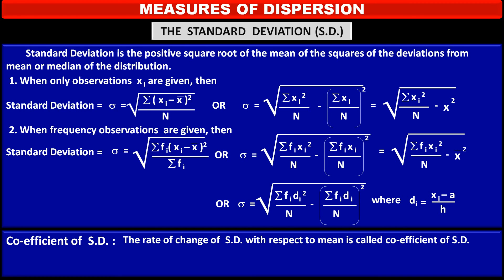The coefficient of standard deviation SD is the rate of change of standard deviation SD with respect to mean. Therefore, coefficient of standard deviation SD is equal to sigma upon x̄, that is, standard deviation SD upon mean x̄.